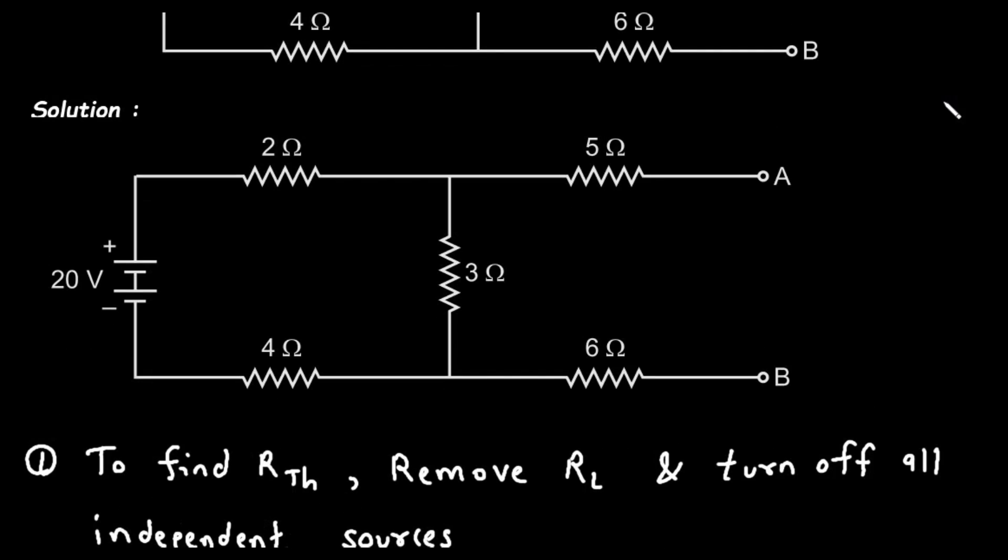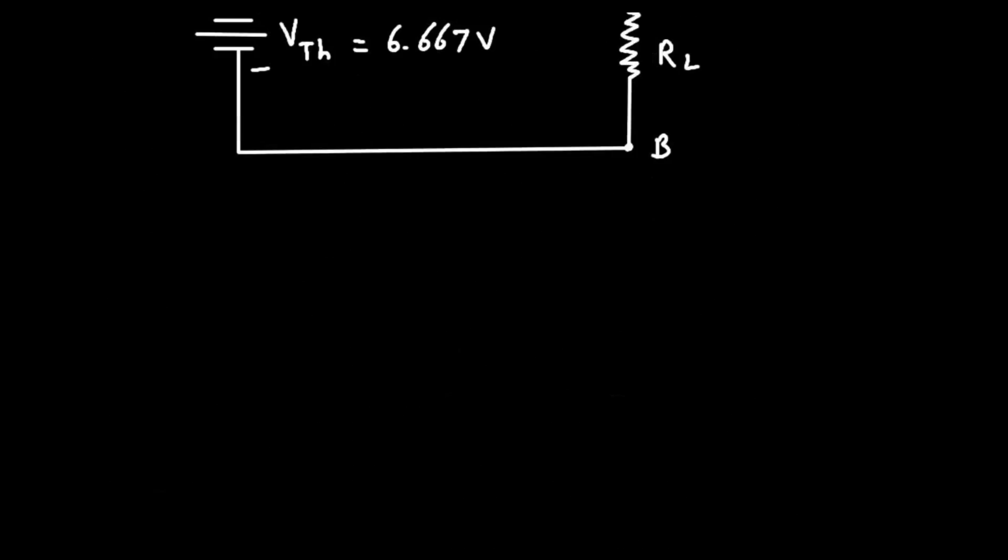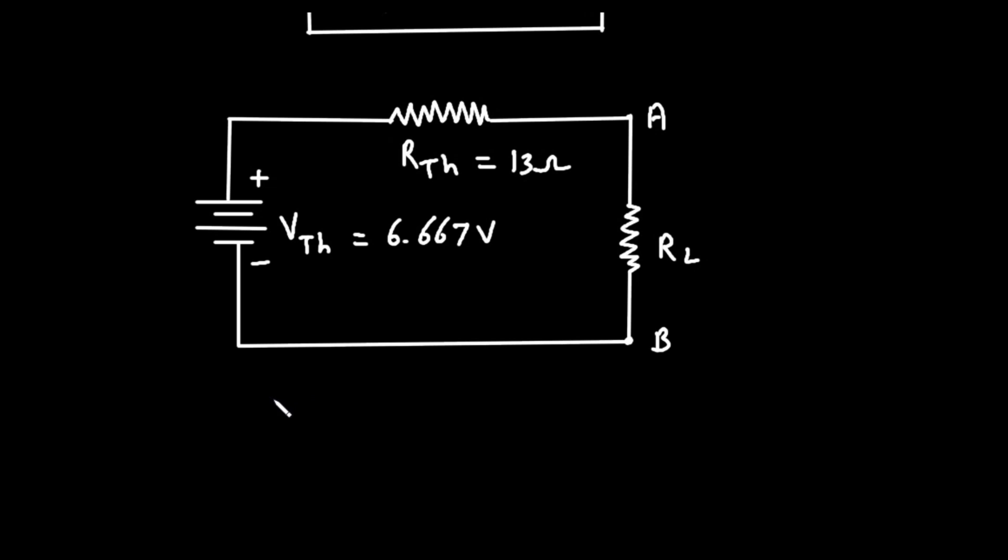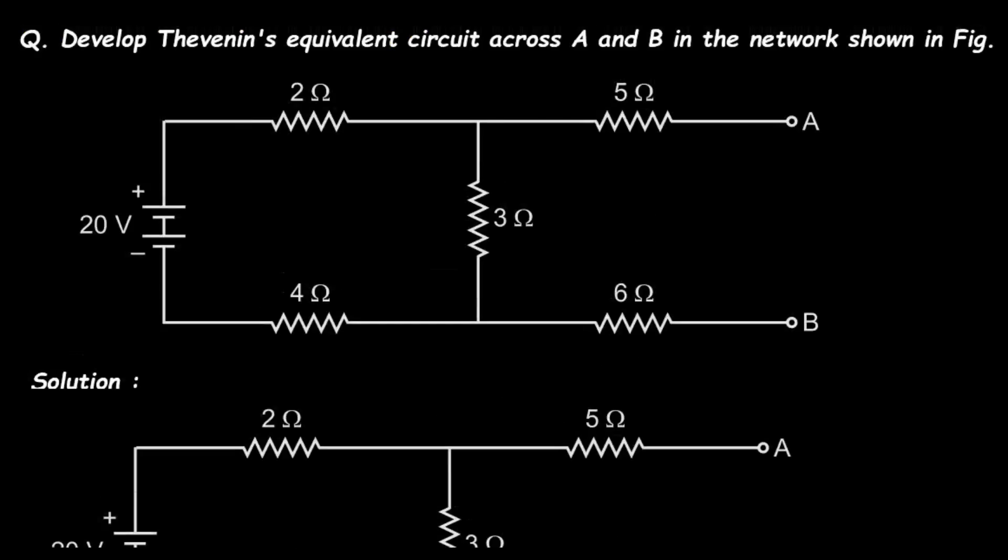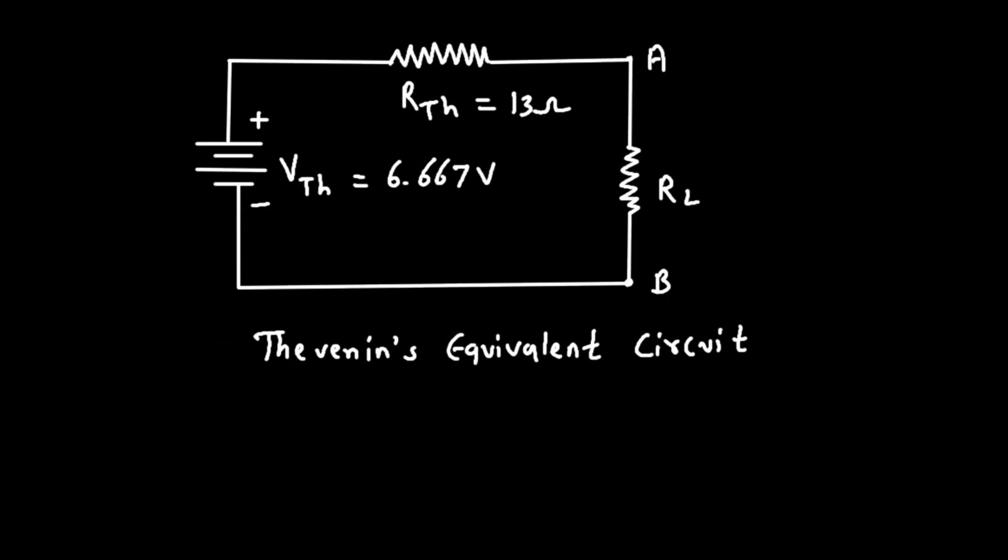Here we can see terminal A and B. Now what is the value of RTH? RTH is equal to 13, so 13 ohm. Now we can write this as Thevenin's equivalent circuit. So this is what we have to find in this problem: Develop Thevenin's equivalent circuit across A and B in the network shown in figure. So this is our final answer.